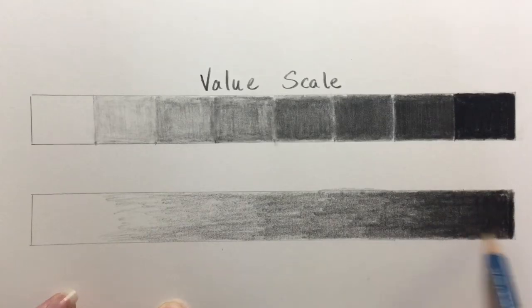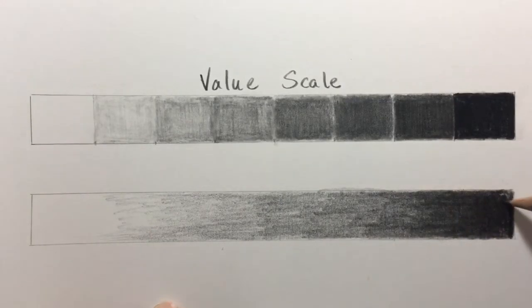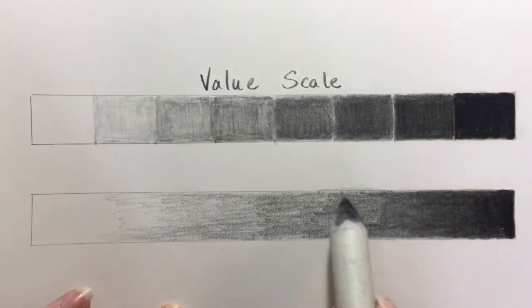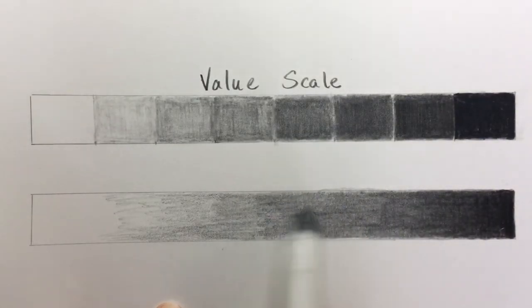Just like the value scale, when making the gradation scale, some alterations will need to be made. For instance, you might need to make some of the value darker or lighter.